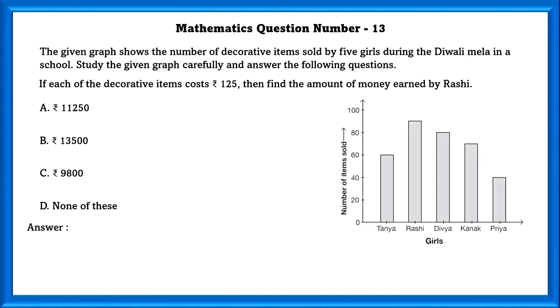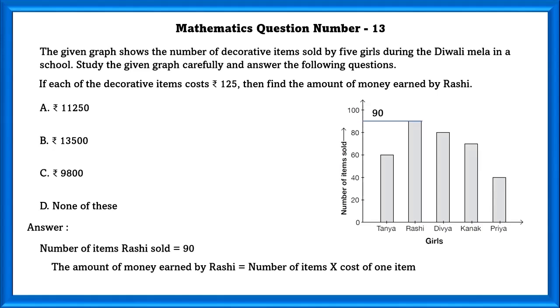Mathematics Question Number 13: The given graph shows the number of decorative items sold by 5 girls during the Diwali Mela in a school. Study the given graph carefully and answer the following questions. If each of the decorative items cost 125, then find the amount of money earned by Rashi. Now we are going to see how many items Rashi sold. Rashi sold 90 items. So in order to find how much money earned by Rashi, we have to multiply the number of items and the cost of one item, which is equal to 11,250.